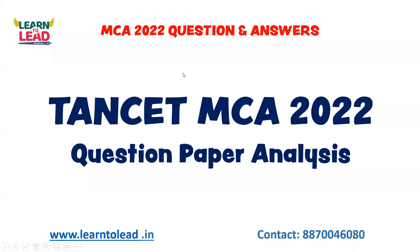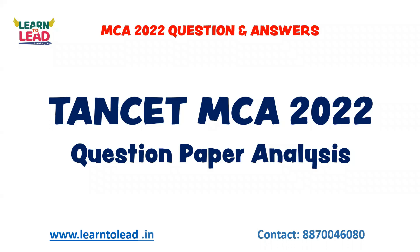For Transet MCI question paper answers, the first question: the greatest possible length which can be used to measure exactly the lengths 4.95 cm, 9.16 cm. Just keep in mind that for greatest possible length, you have to find out HCF.